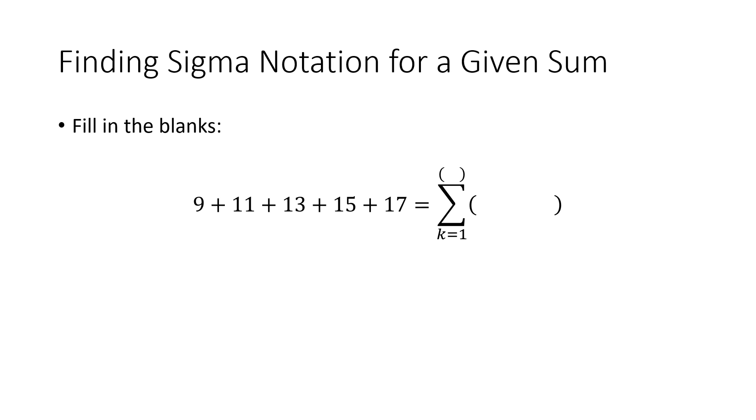Let's do another one. So again we've got a sum here, 9 plus 11 plus 13 plus 15 plus 17, and we want to try to find a sigma notation that goes with that. Again I'm giving you the fact that I want you to start at k equals 1, and so there's two things we need to figure out. We need to figure out a formula and we need to figure out the final value of k.